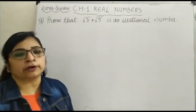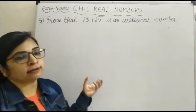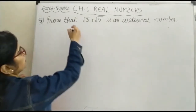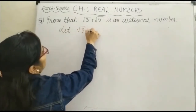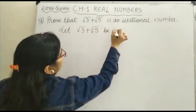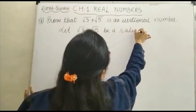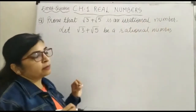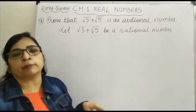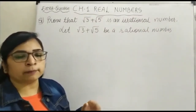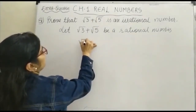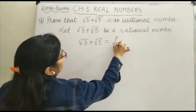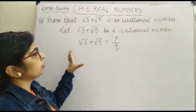We will start this proof with the help of the contradiction method. So instead of proving that it is an irrational number, we will assume that these numbers are rational. Let √3 + √5 be a rational number. If it is a rational number, then it can be expressed in the form of P/Q, where Q is not equal to 0 and P and Q are co-prime numbers. So √3 + √5 = P/Q, because we have assumed that the given number is rational.